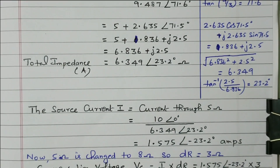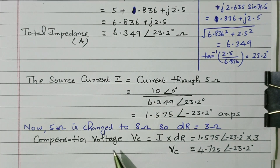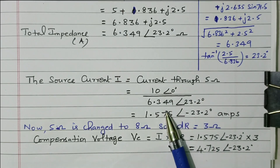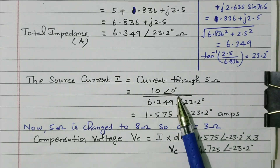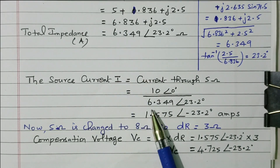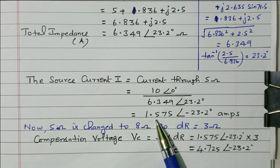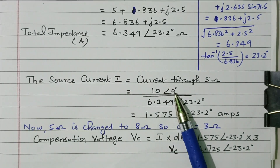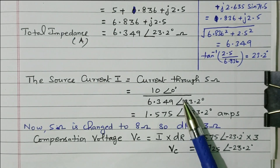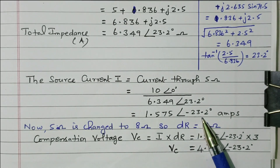Now we have calculated the total impedance. From that, we can calculate the current flowing through the circuit and thereby the compensation voltage. The current through the 5 ohm resistor is I equals V by R. V is 10 volts at angle 0 degrees. R is the impedance we calculated: 6.349 at angle 23.2 degrees. So 10 divided by 6.349 gives 1.575, and the angle is 0 minus 23.2, which equals minus 23.2 degrees. The current value is 1.575 at an angle of minus 23.2 degrees.